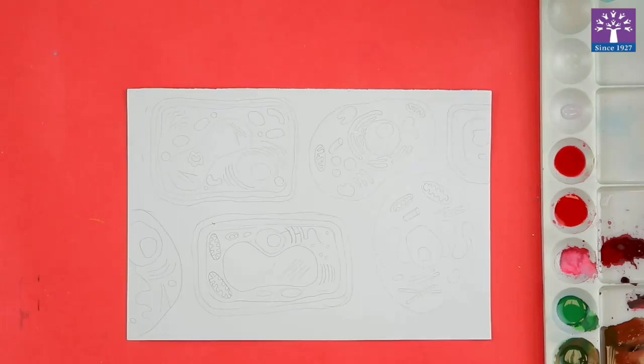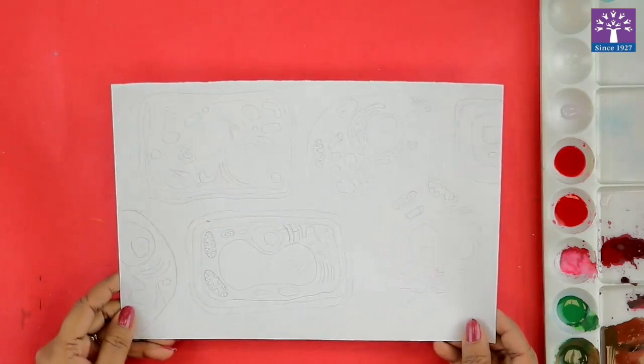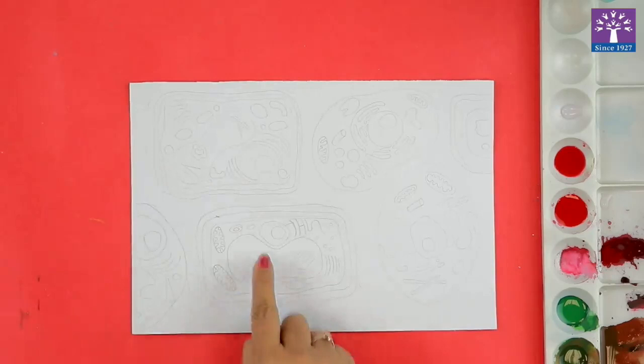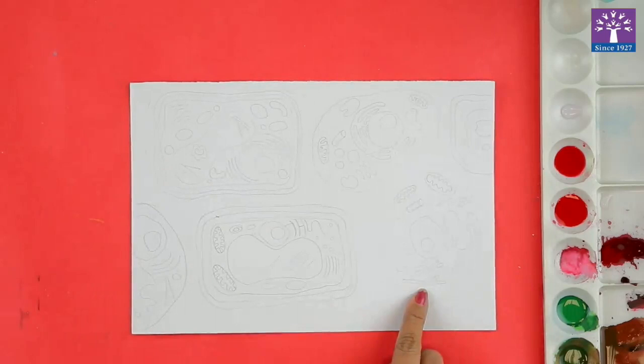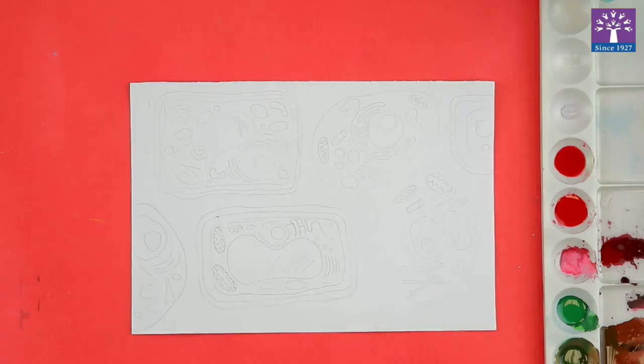Hello friends, our today's activity is cell painting. As you can see, I have already drawn a sketch of a cell, a plant cell or an animal cell. These rectangular figures that you can see are the plant cells and these roundish figures are the animal cells.